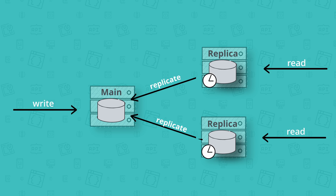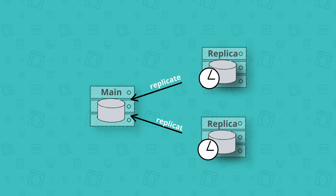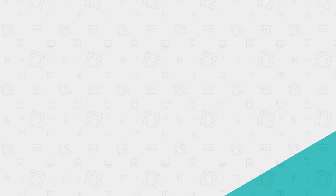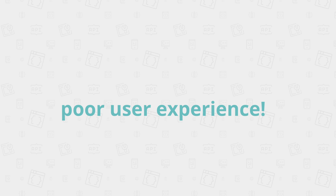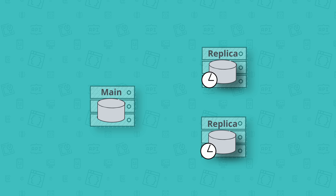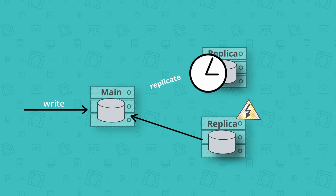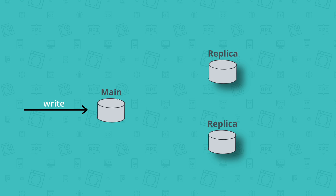Replicas also need to serve more and more read requests simultaneously, leading to an increasing replication lag because they simply can't catch up. A massive replication lag leads to poor user experience, as users are presented with outdated data and it takes increasingly long to show the latest changes. Eventually nodes run out of memory and crash, which increases pressure on the remaining nodes and speeds up the collapse of the whole system.